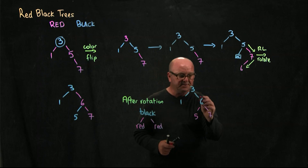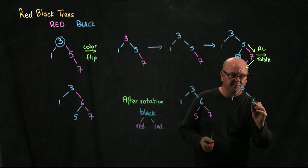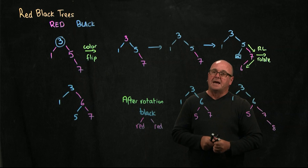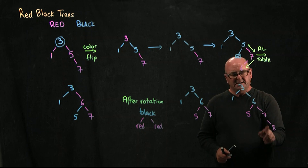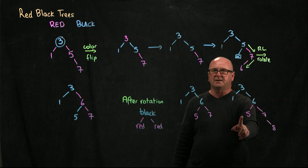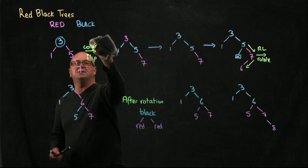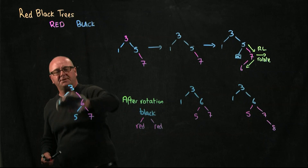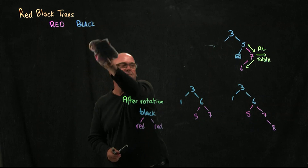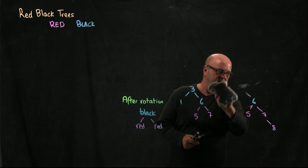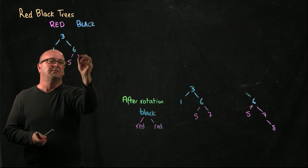Let's add an 8 to our tree. Now we've got a violation — two consecutive red nodes. The 8 is the node we added, the parent is the 7, the 6 is the grandparent, and the 5 is the aunt. We have a red aunt, so we color flip. When we color flip, we end up changing the colors. We had a 3, a 1, a 6, 5, 7, and 8.